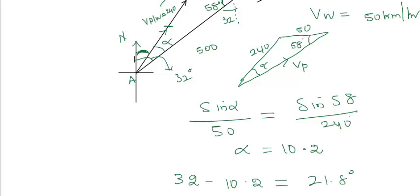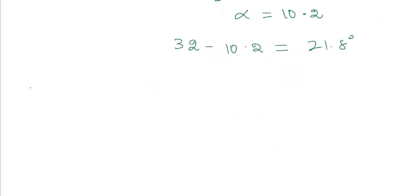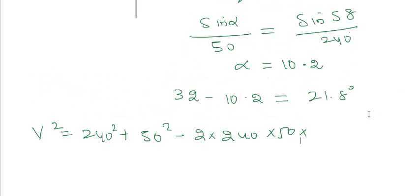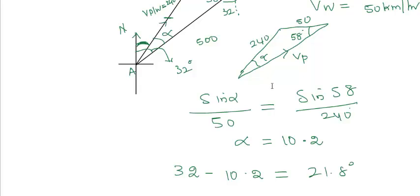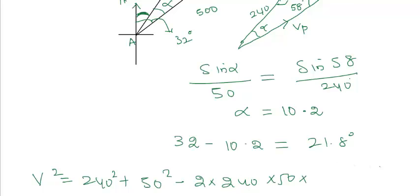We can use cosine rule to calculate it. From this triangle, V squared is 240 squared plus 50 squared minus 2 times 240 times 50 times... and you need to find this angle. This angle is nothing but 180 minus 58 minus alpha, cos of 180 minus 58 minus alpha, where alpha is 10.2.